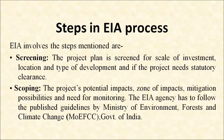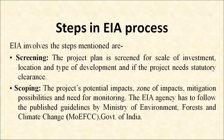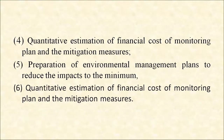The steps in EIA process are: first, screening — the project plan is screened for scale of investment, location, type of development, and whether it needs statutory clearance. Second, scoping — the project's potential impact, zone of impacts, mitigation possibilities and need for monitoring. The EIA agency must follow published guidelines by the Ministry of Environment, Forest and Climate Change (MOEFCC), Government of India. Next is collection of baseline data — an environmental status of the study area.